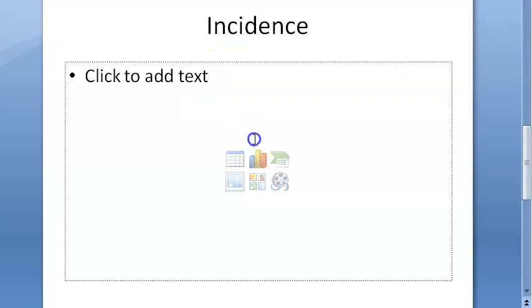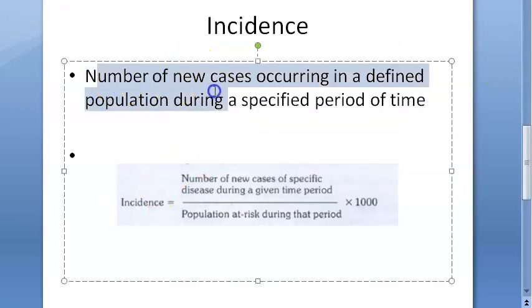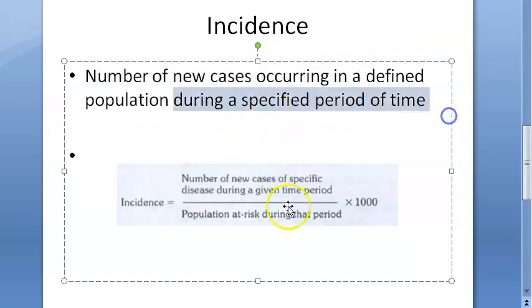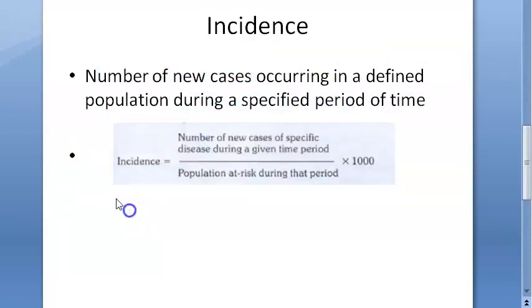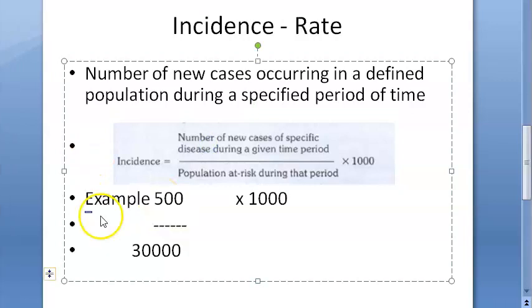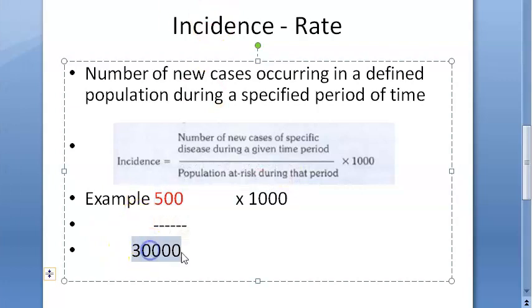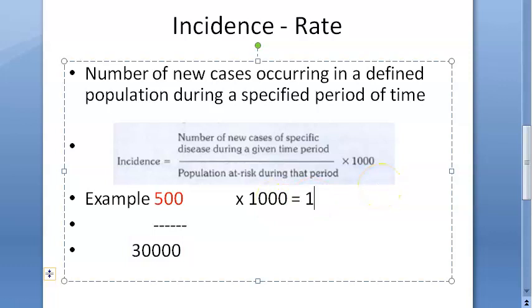Now let's look at the spelling of prevalence and incidence. Incidence is the number of new cases occurring in a defined population during a specified period of time. Applying that data: there are 500 new cases of a particular illness in a population of 30,000 people in a year. So 500 divided by 30,000 multiplied by 1,000 gives 16.7 per thousand per year.